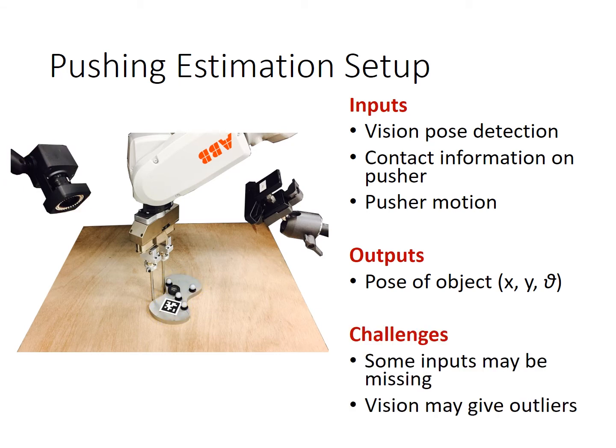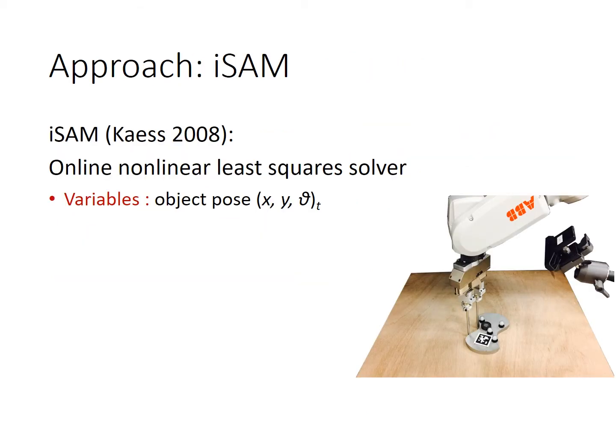Key challenges include missing inputs and noisy measurements. For example, vision input will be missing during occlusion, and when occlusion exists, vision may give outliers. Our approach uses iSAM as the framework, which can be seen as an online nonlinear least-squares solver. It can quickly find a solution after we add new variables and cost functions at every time step.